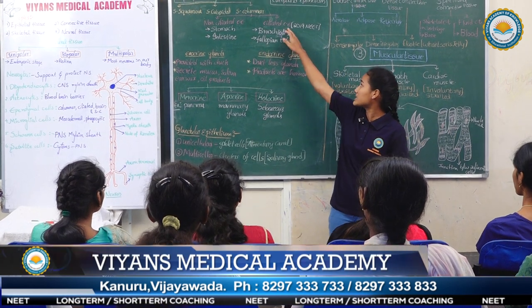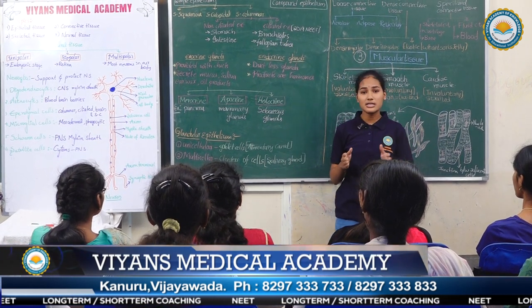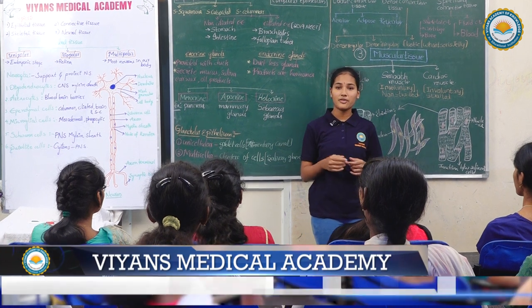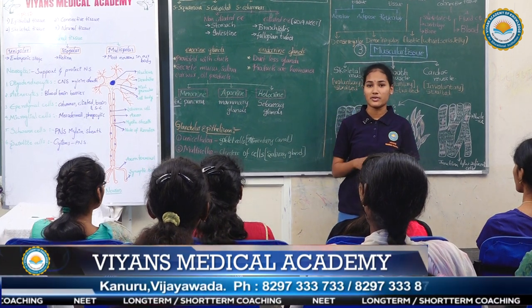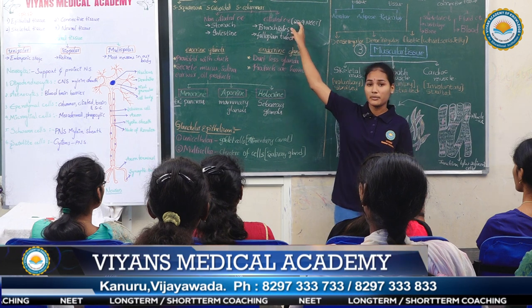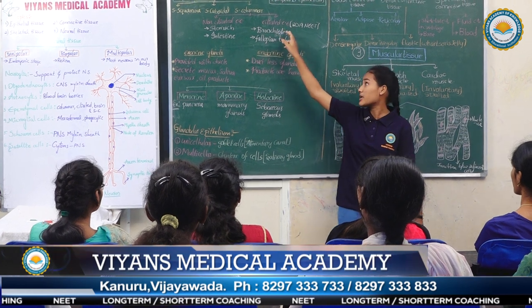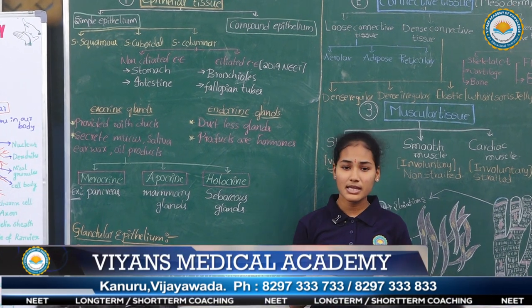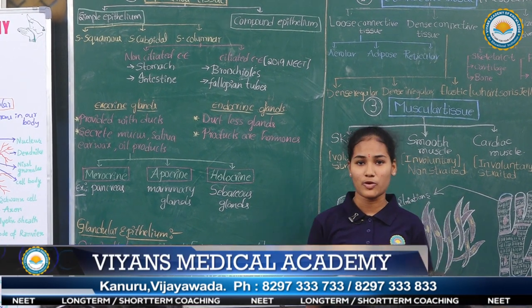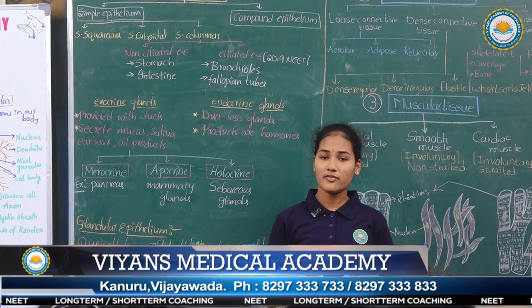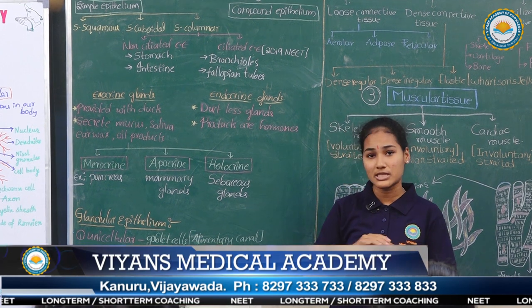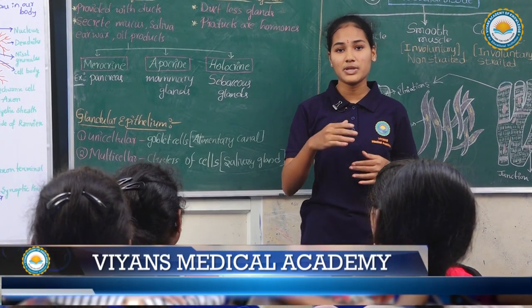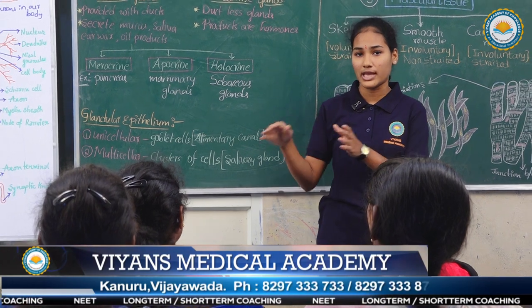The second type is ciliated epithelium. In the inner surface of bronchioles and fallopian tubes, cilia are present on the surface. This is an important point as it appeared in the 2019 examination. The cilia help to move particles or mucus in a specific direction over the epithelium.